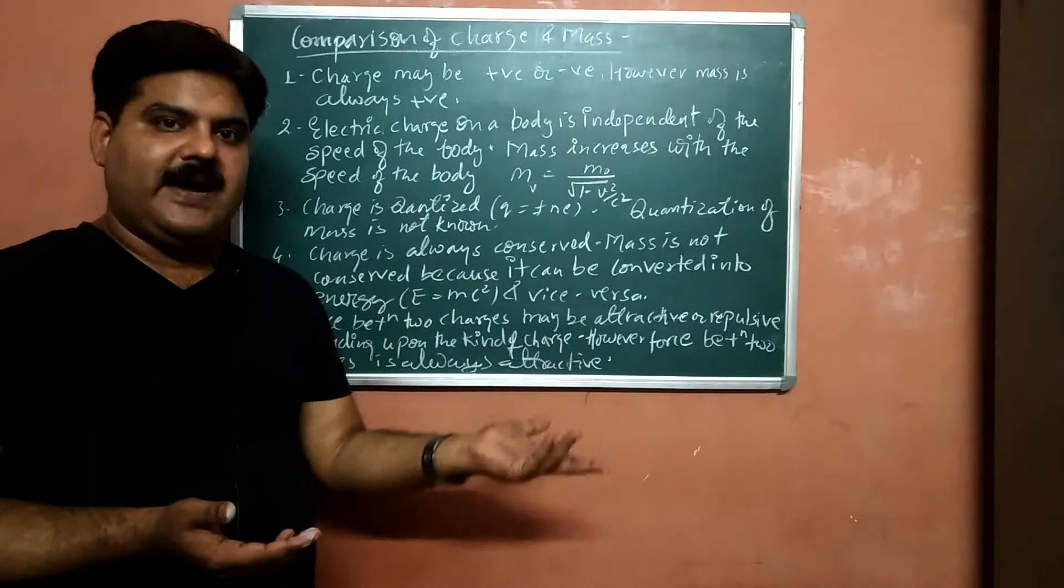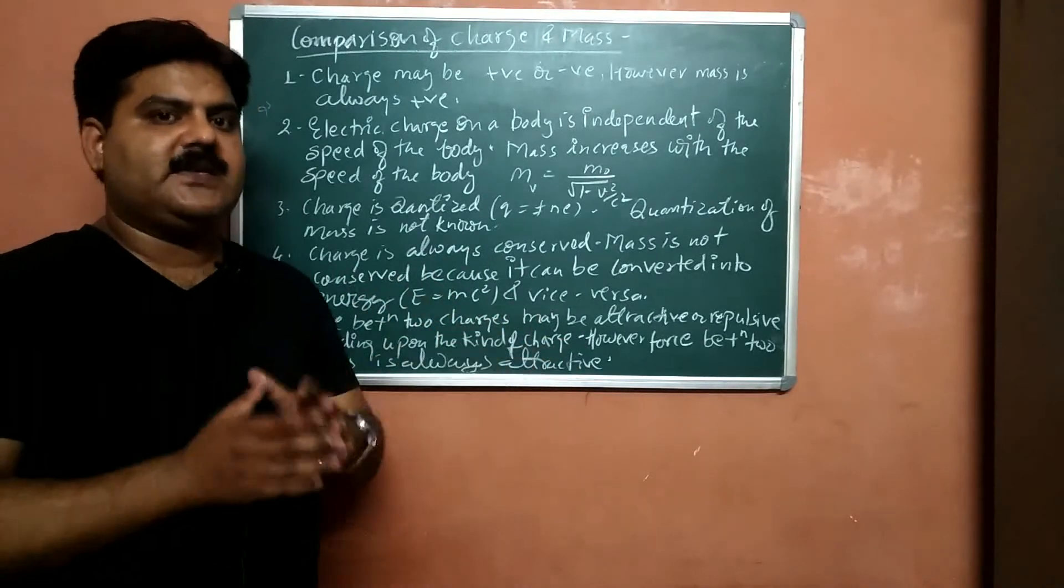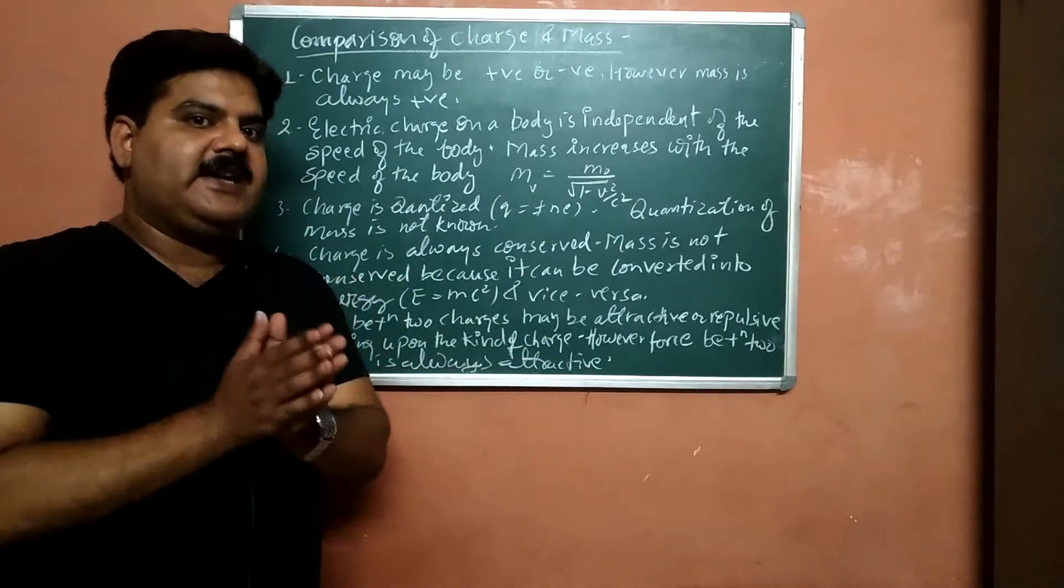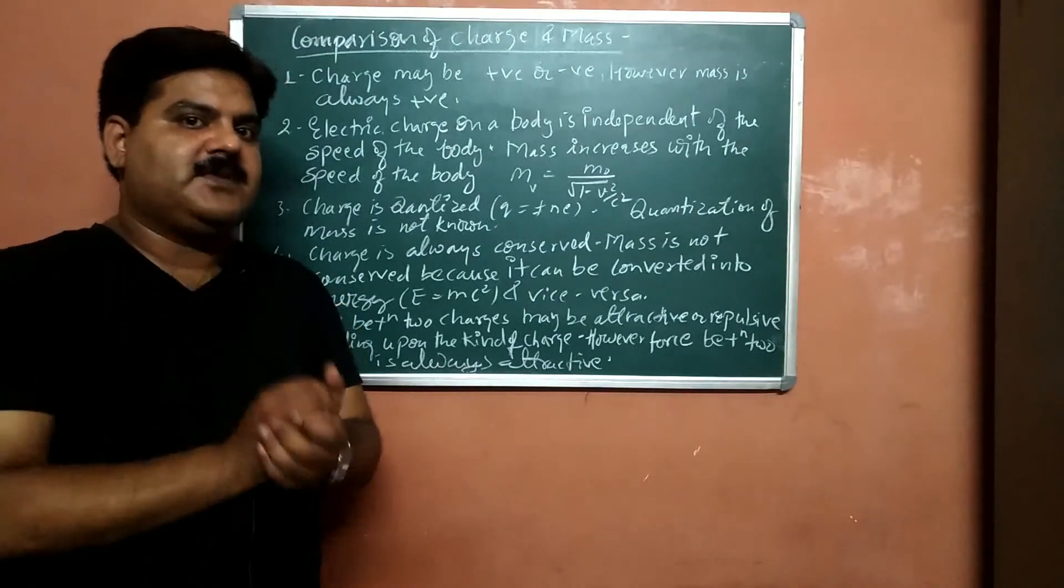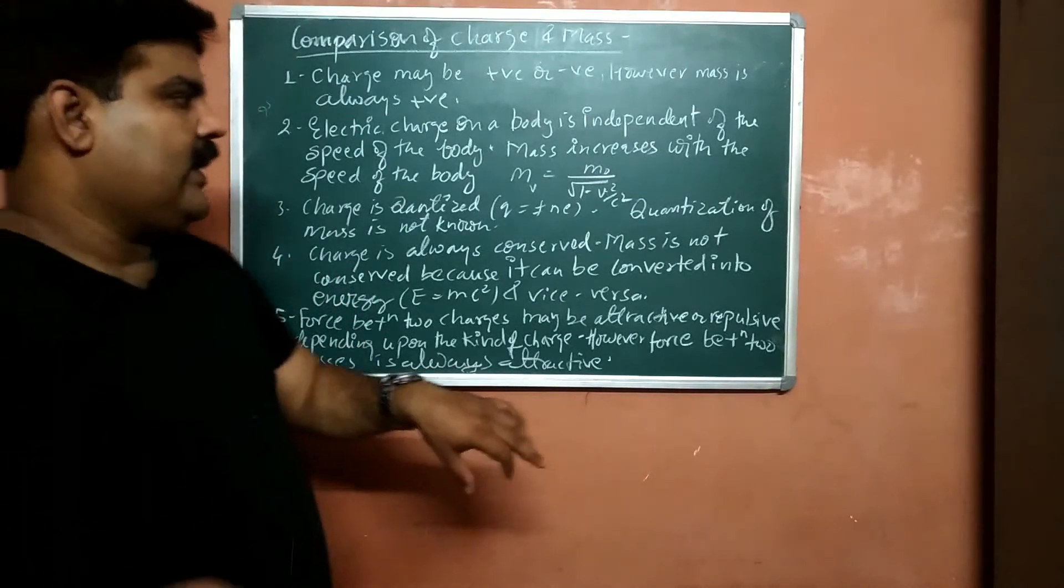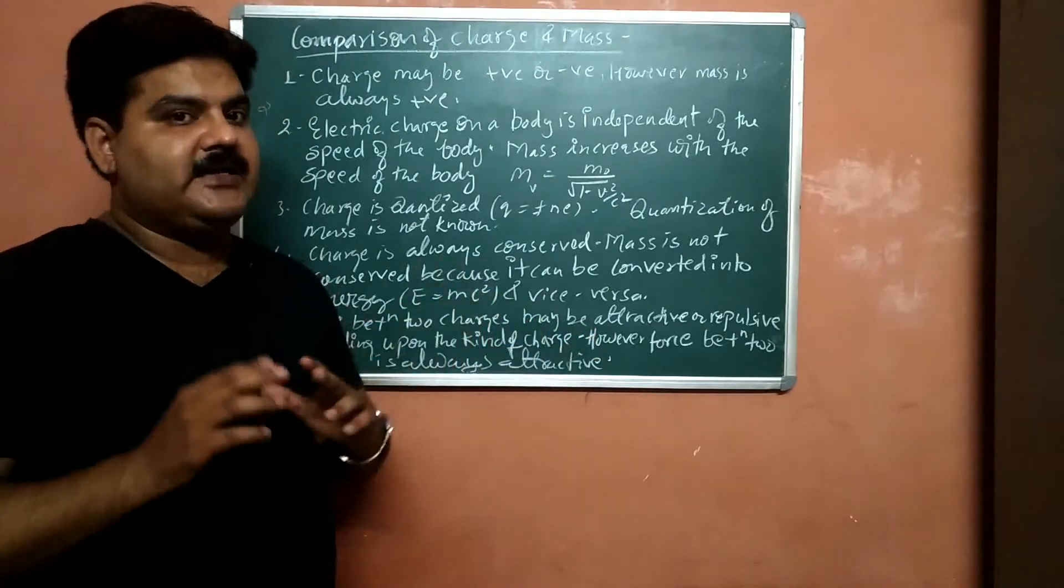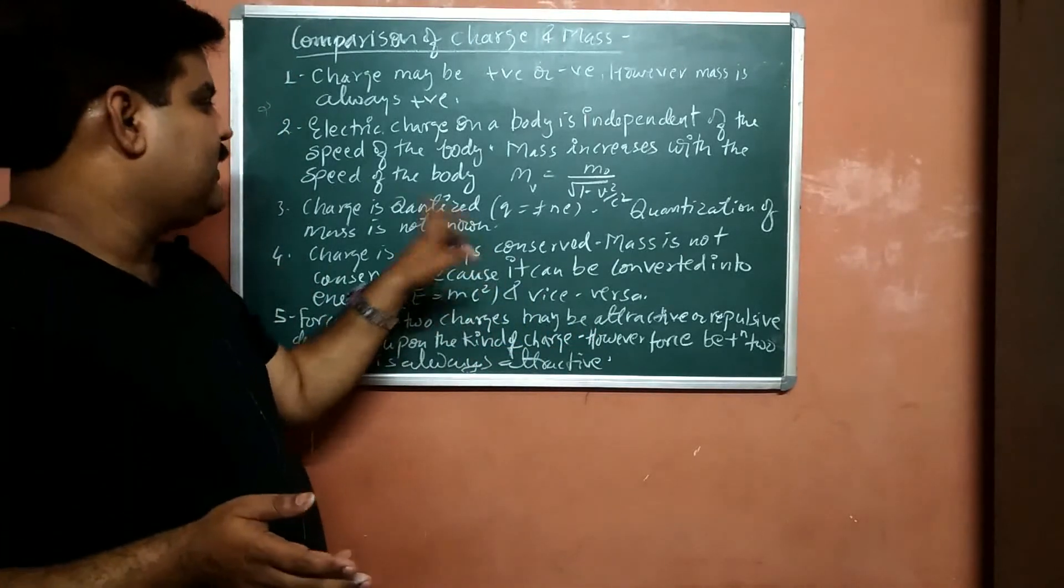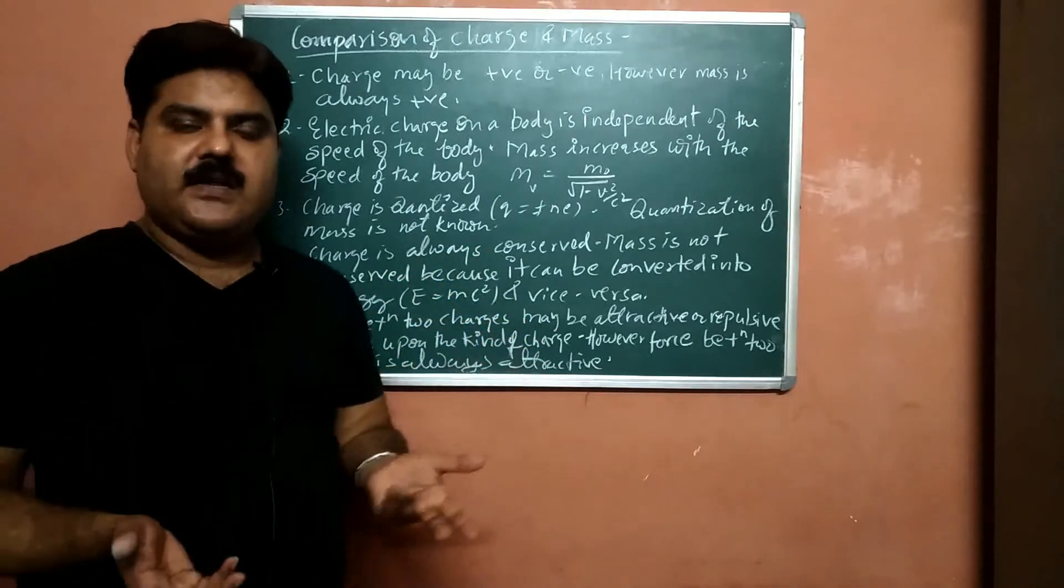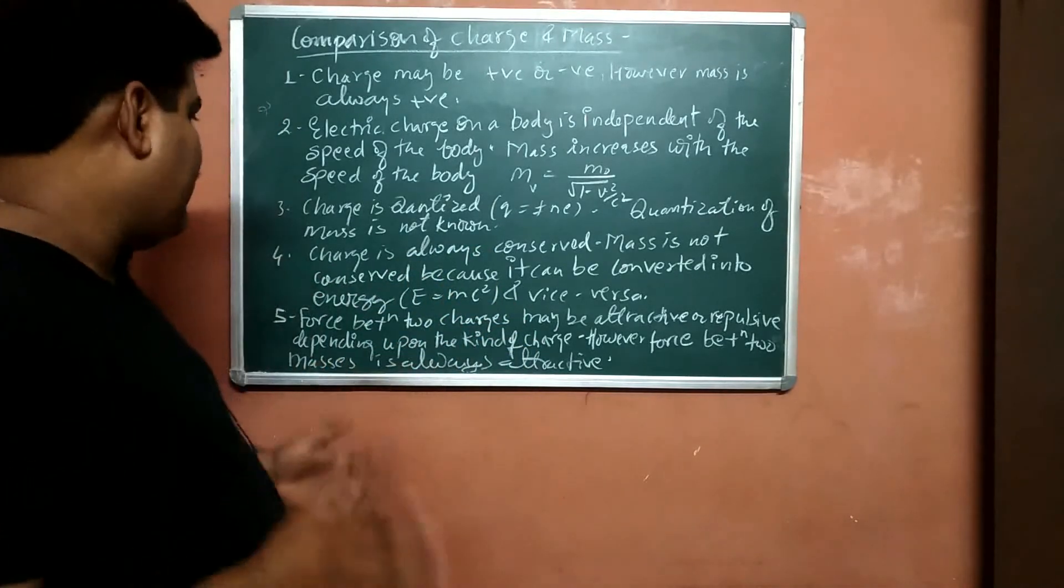Or in turn, minus e, minus 2e, minus 3. Charge is not continuous, but it is an integral multiple of minimum charge of the electron or proton. But mass is always continuous, it does not exist in quantized form. However, the quantization of mass is not yet known.